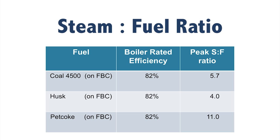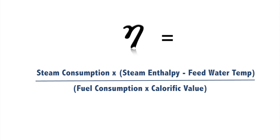The lower the steam to fuel ratio, the lower is the boiler efficiency. When you determine the boiler efficiency using the steam to fuel ratio, it firstly tells you what the efficiency of the boiler is. It allows you to know whether your efficiency is near to the desired efficiency or there is a huge gap. It also allows you to know what the trends are, whether the efficiency is improving or whether the efficiency is on a decline.